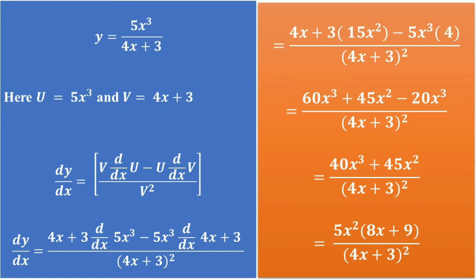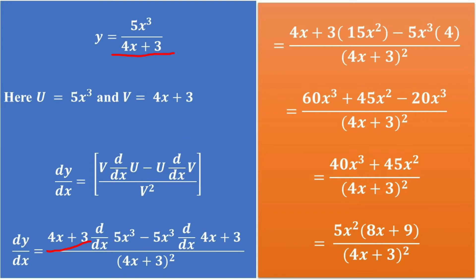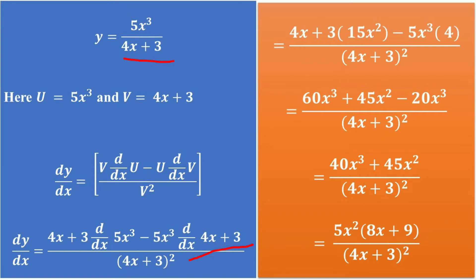So the derivative of this function d/dx equals the denominator function into derivative of the numerator, minus the numerator into derivative of the denominator, whole divided by the denominator squared. So dy/dx equals (4x + 3) times d/dx of 5x³ minus 5x³ times d/dx of (4x + 3), whole divided by (4x + 3) squared.